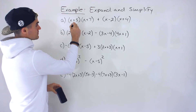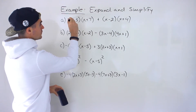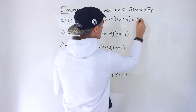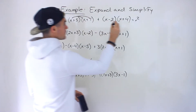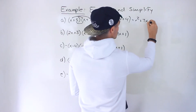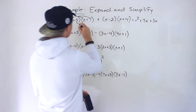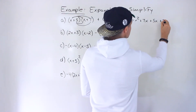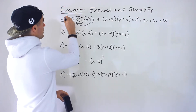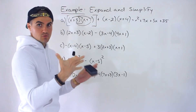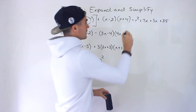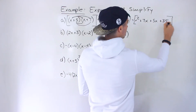Starting with this one, we got x plus 5 times x plus 7. We would FOIL it out. So we would do x times x, which gives us x squared. Then x times 7 gives us 7x, and 5 times x gives us 5x. And then 5 times 7 gives us 35. Let's put this in square brackets to keep track of what we're doing. This multiplication ends up being that result.